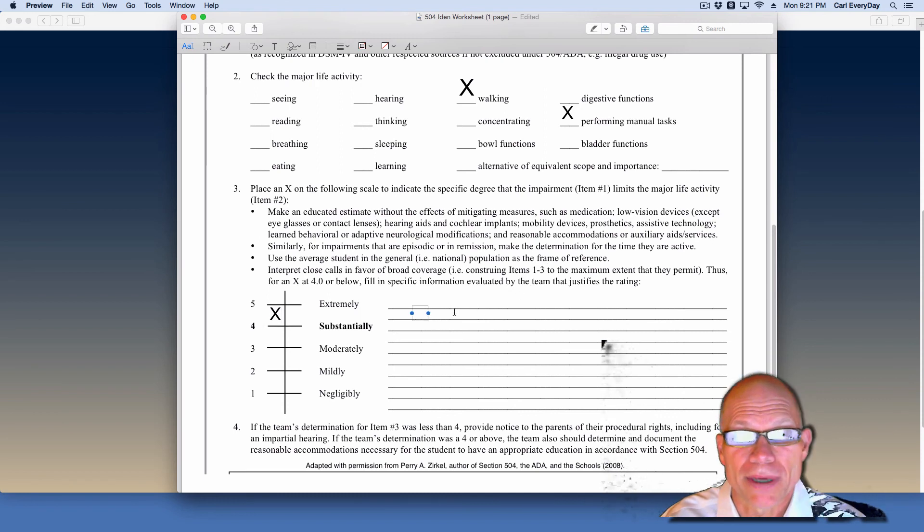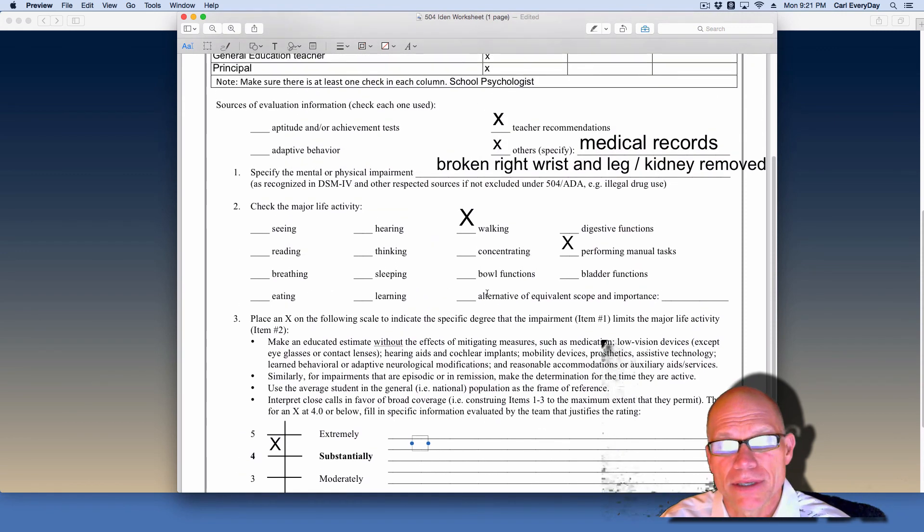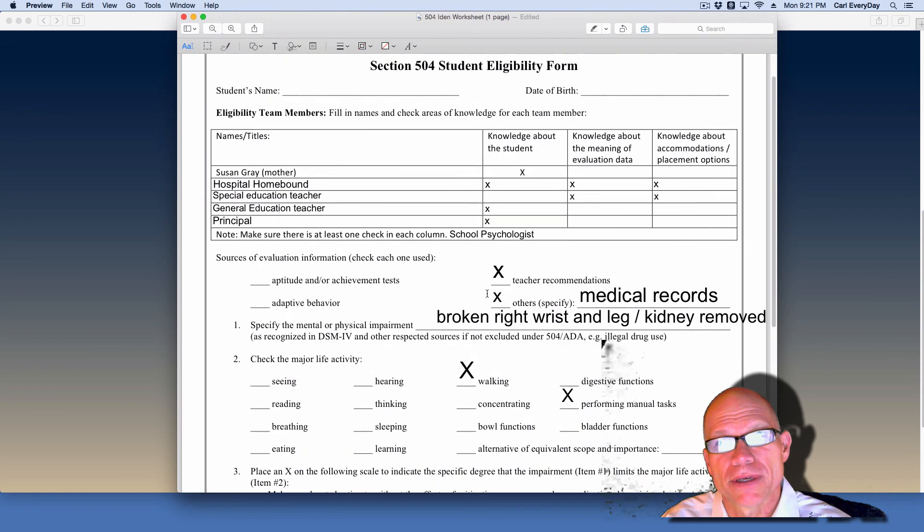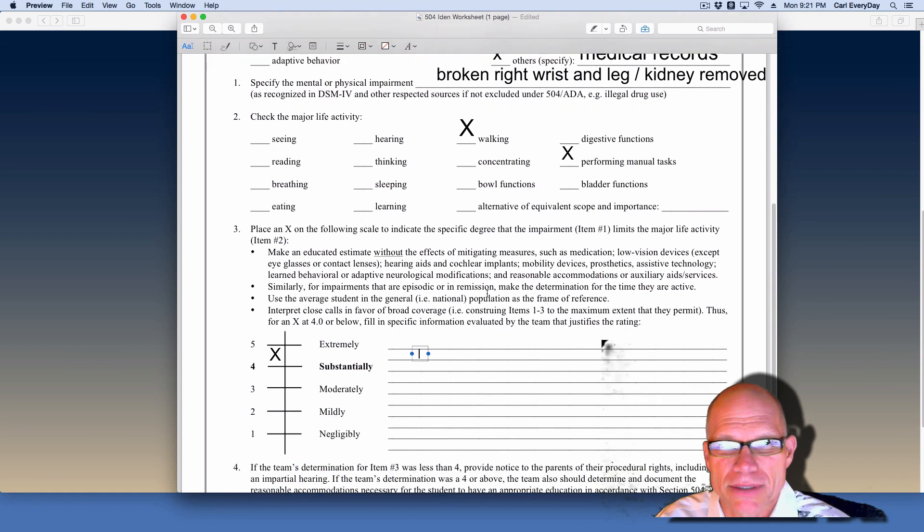And in this area is where you can write down your reason for saying substantially. One of the things I like about this form is that it does incorporate all of the elements of eligibility for 504. And it does it in a way that asks the team to make decisions and asks the team to actually get something done. I think good forms are important in promoting good policy.